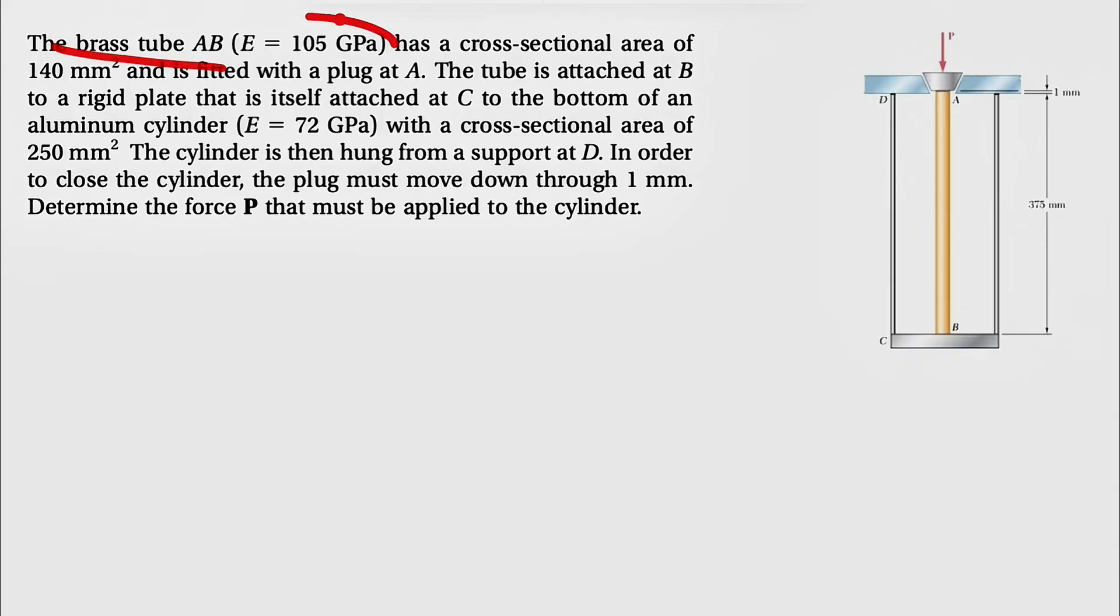We have a brass tube AB that has elastic modulus E = 105 GPa and has a cross-sectional area of 140 mm². It's fitted with a plug at point A. The tube is attached at B to a rigid plate that is itself attached at C to the bottom of an aluminum cylinder, E = 72 GPa, with a cross-sectional area of 250 mm². The cylinder is hung from a support at D.